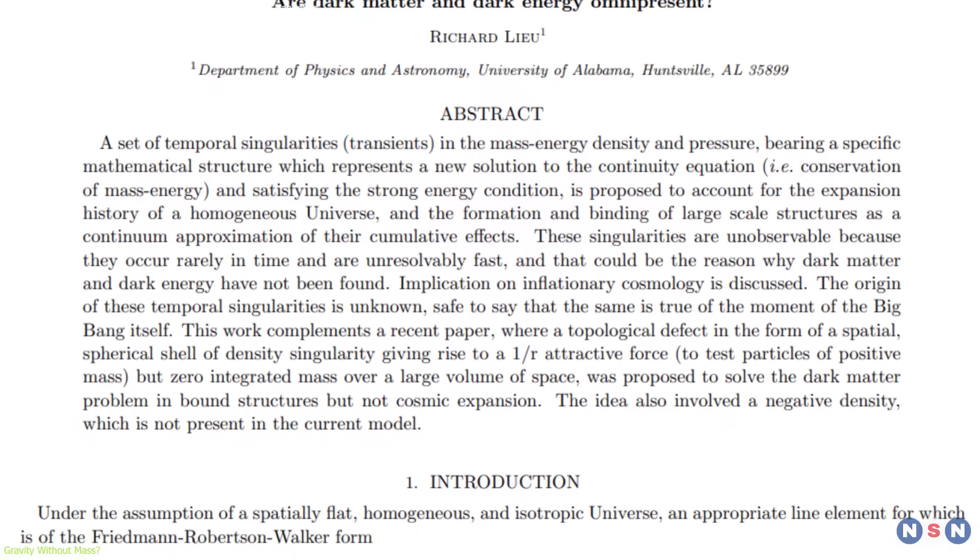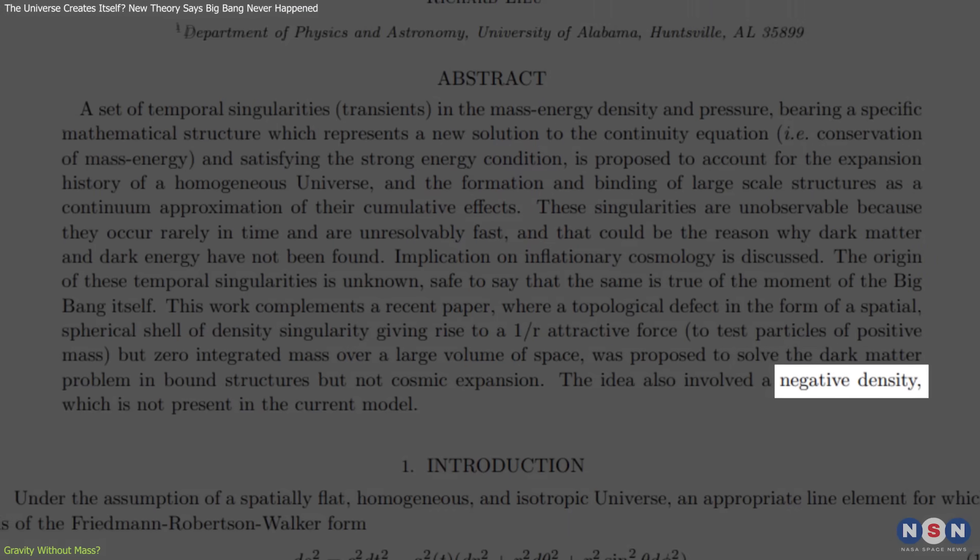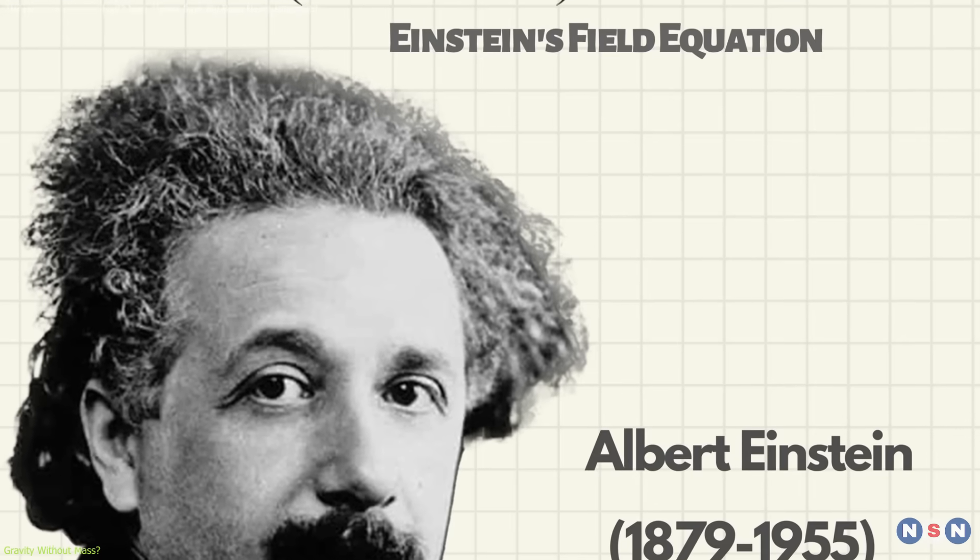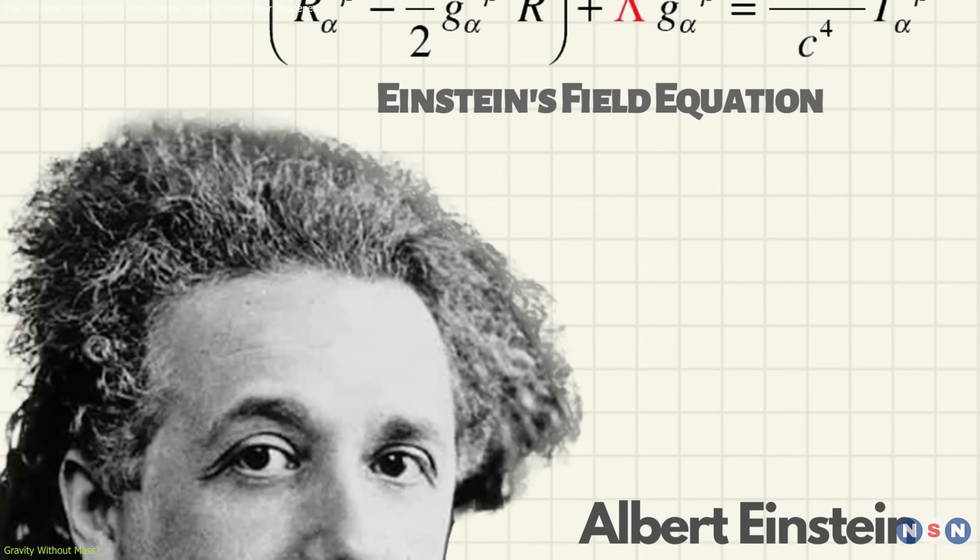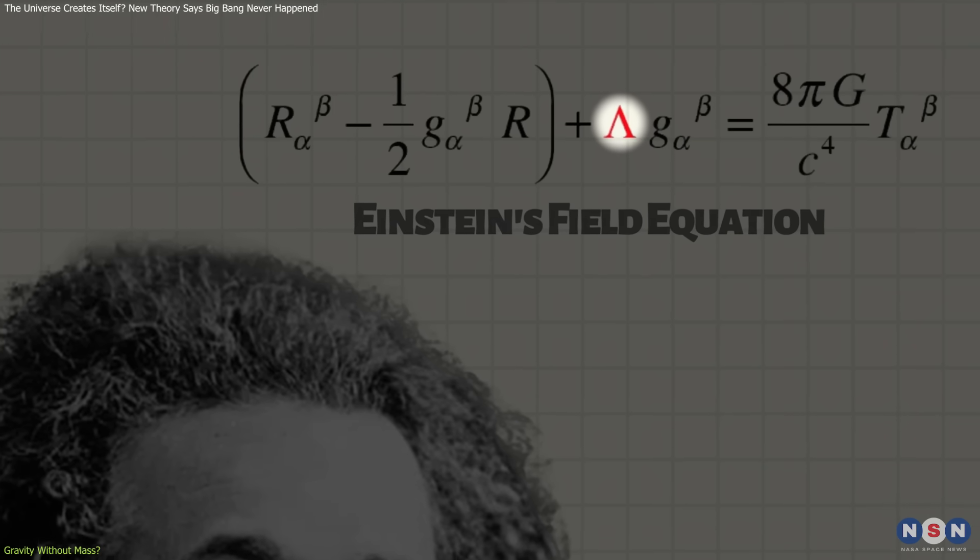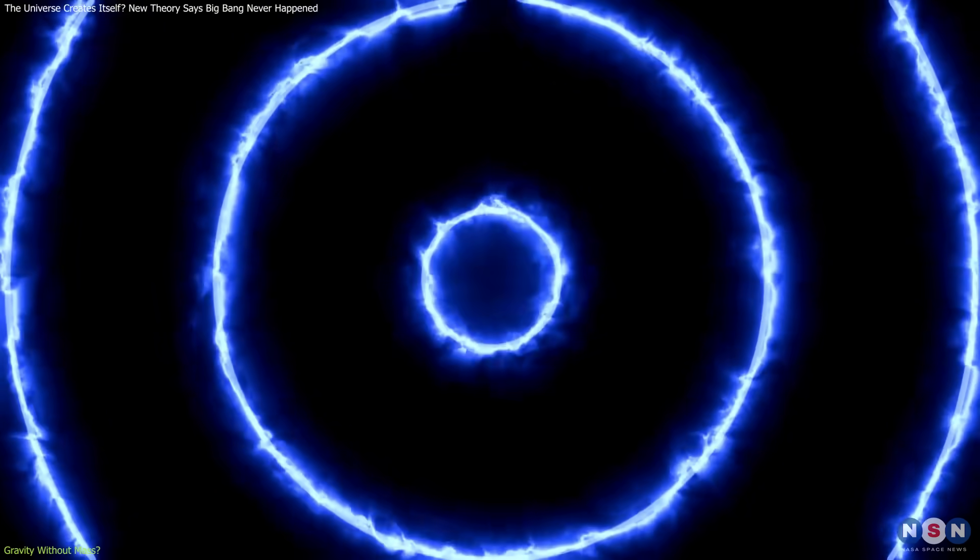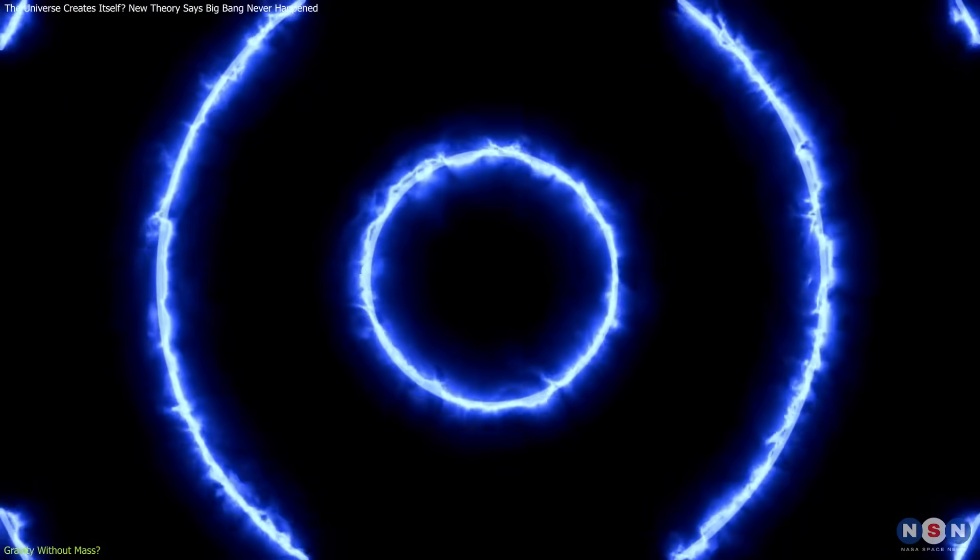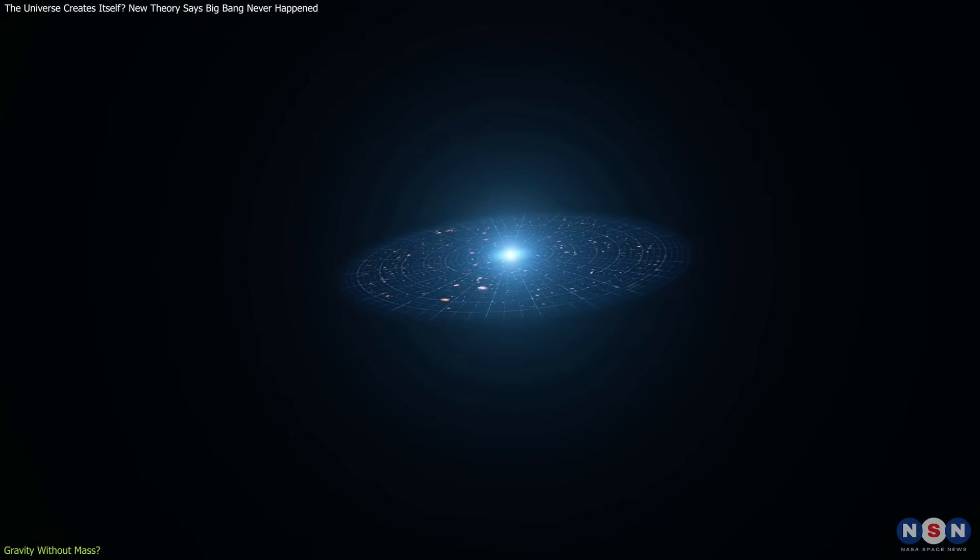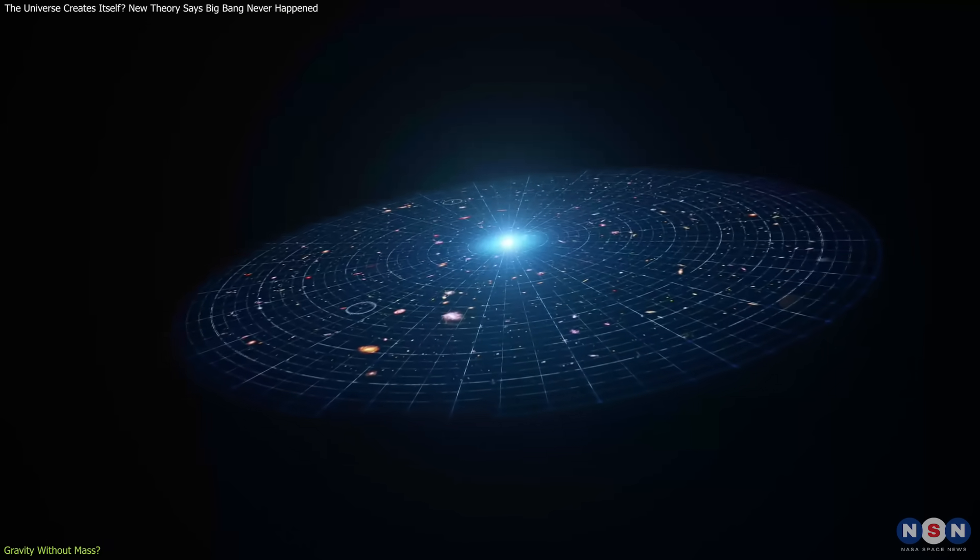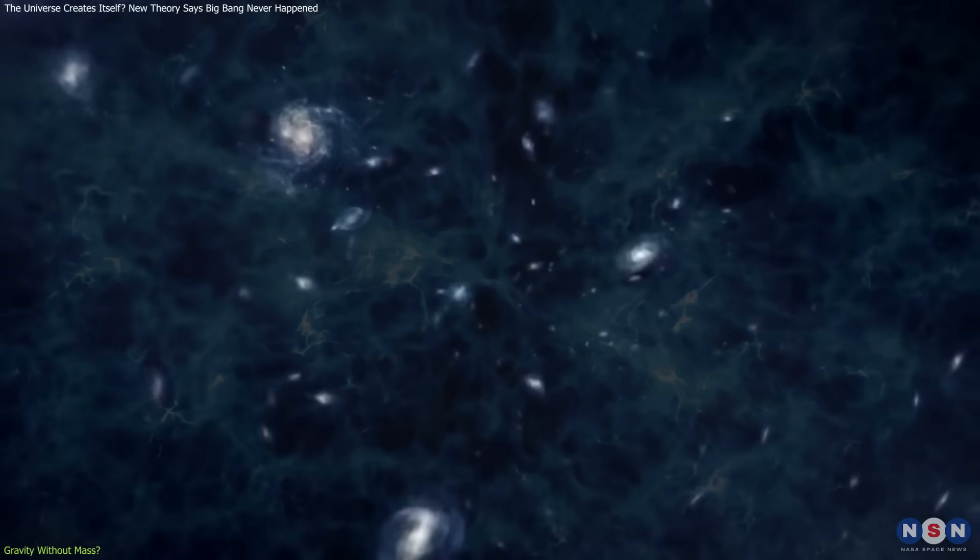But Liu's theory goes even further by reintroducing the idea of negative pressure. In 1917, Einstein added a cosmological constant to his equations to keep the universe static, a move he later regretted. That constant represented a uniform energy density pushing outward, counteracting gravity. Decades later, the concept was revived to explain the observed acceleration of cosmic expansion, rebranded as dark energy.